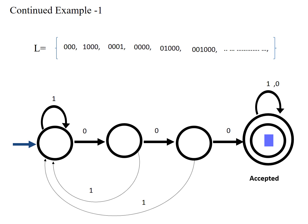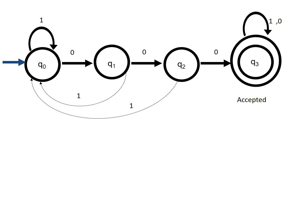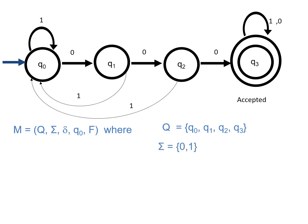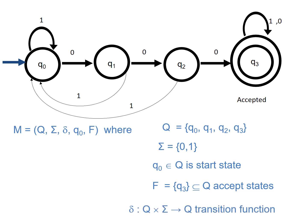Just drawing the diagram is not enough to get full marks — you must also complete the formal description. A DFA is defined by five tuples denoted as M = (Q, Σ, q₀, δ, F). Q is the set of states: {q0, q1, q2, q3}. Σ is {0, 1}. q₀ is the start state. F = {q3} is a subset of Q. δ: Q × Σ → Q is the transition function.